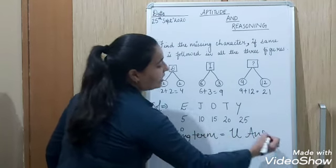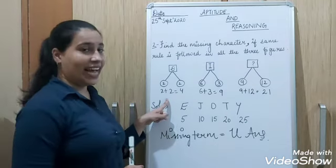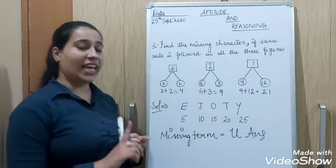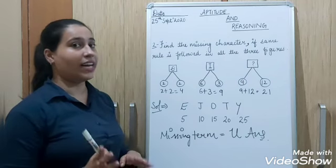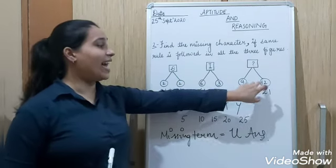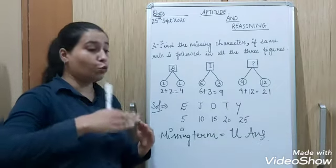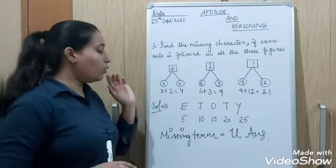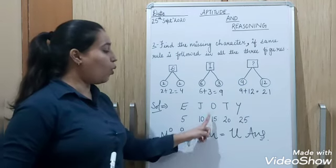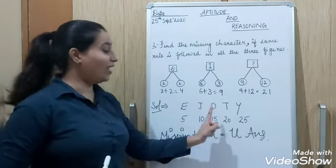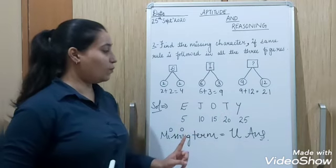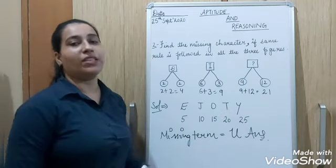Again I am explaining. You have to remember E J O T Y. Here you have added the numbers, 2 plus 2 is 4, so fourth place has which character? D. Start from A: A first place, B second, C third, and D fourth. Now 6 plus 3 is 9. So ninth place has I. When you add 9 plus 12, first place 21. So 21st place has which character? For that you just have to remember E J O T Y. E 5, J 10, O 15, T 20, and Y 25. Then T is at 20th place, so 21 after 20, so after T is U. So 21 place has U, so U is the missing term. This is the required answer.